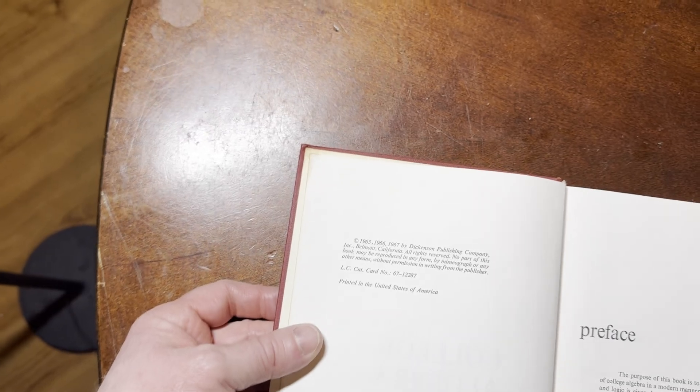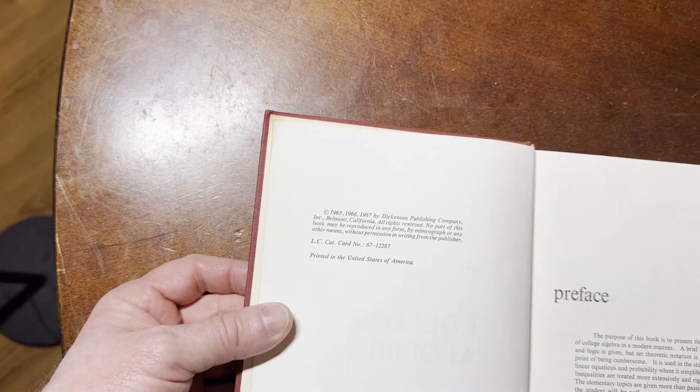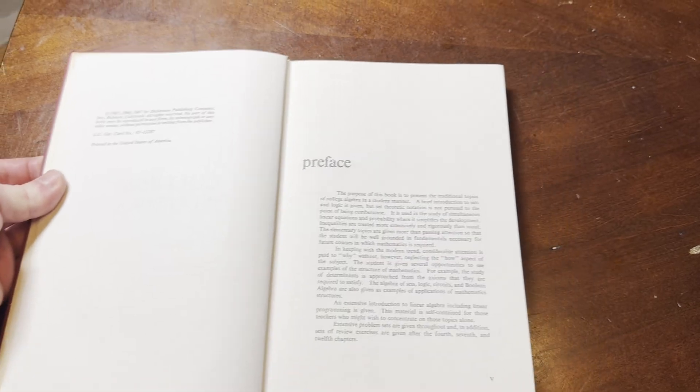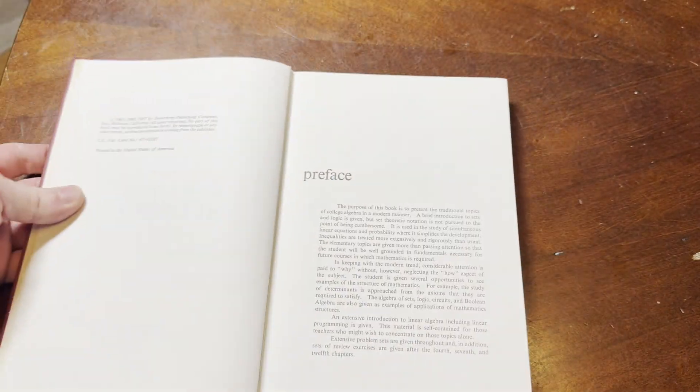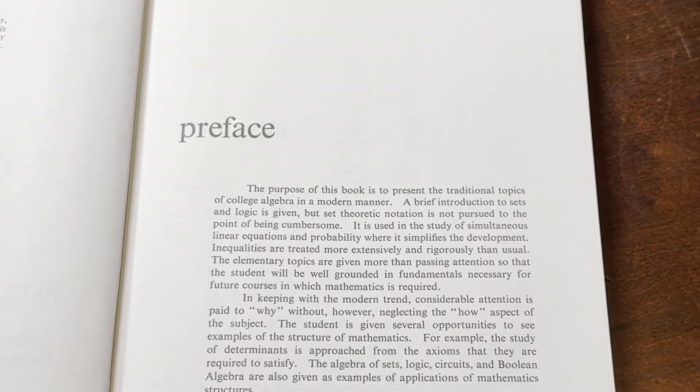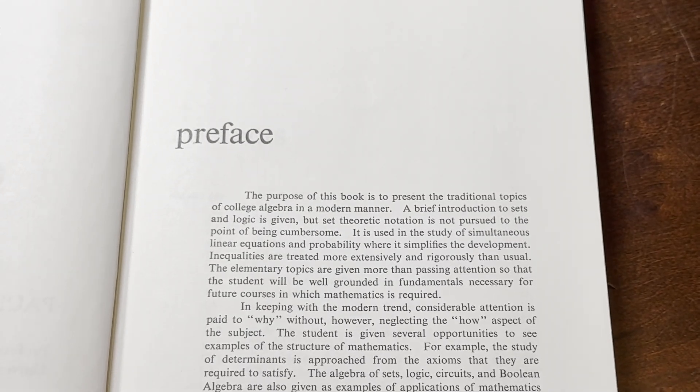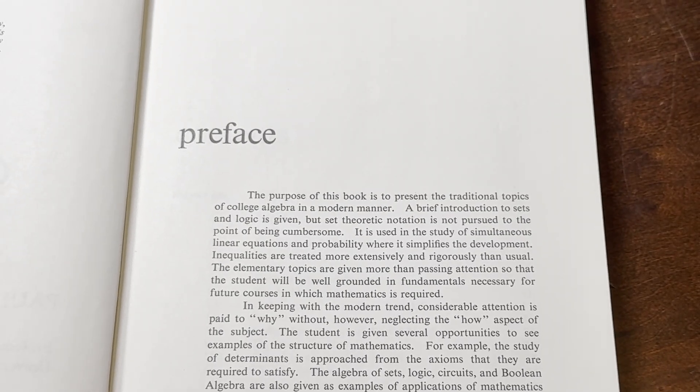There we go. Here's a copyright. All right, so this must be the third edition. We have 65, 66, and 67. The purpose of this book is to present the traditional topics of college algebra in a modern manner.